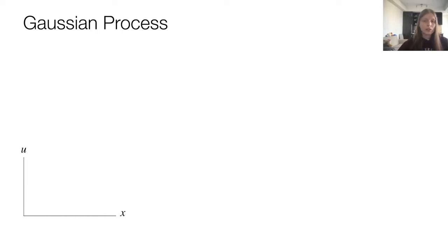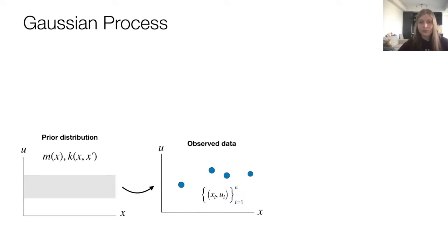The first step of a Gaussian process is to come up with a prior. In a Gaussian process, this prior is given in the form of two functions, m and k, called the mean and the covariance functions. Then I observe some data. What the Gaussian process then does is it allows us to compute a posterior distribution. So what does u of x look like, given the data that I've observed?